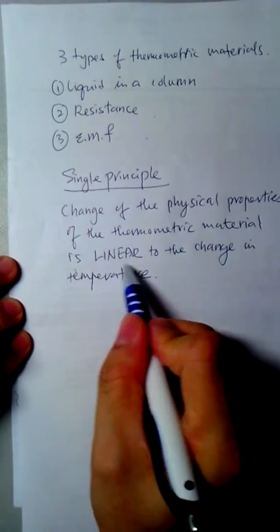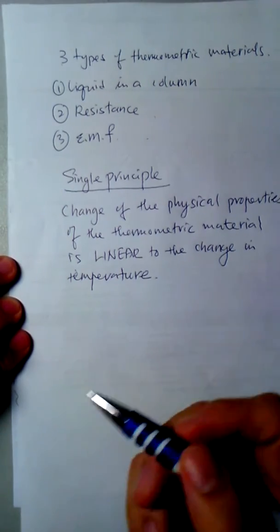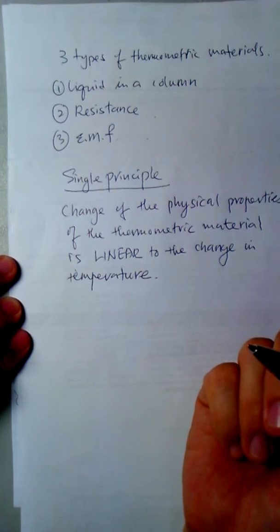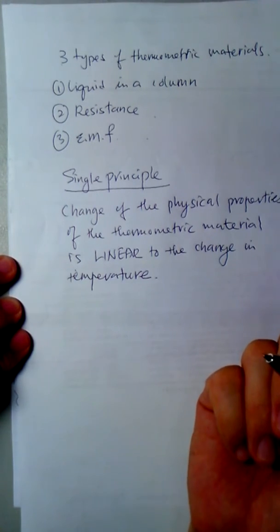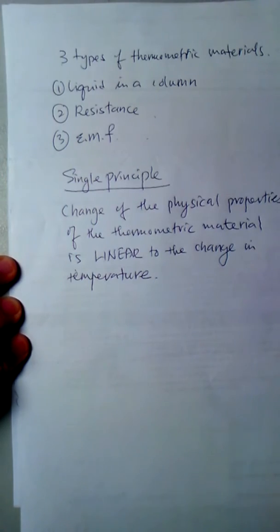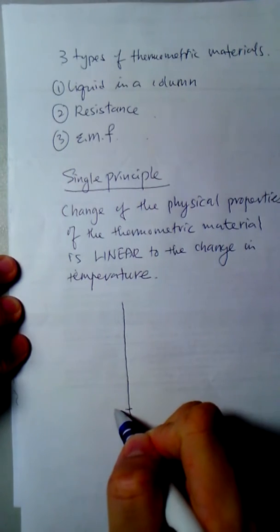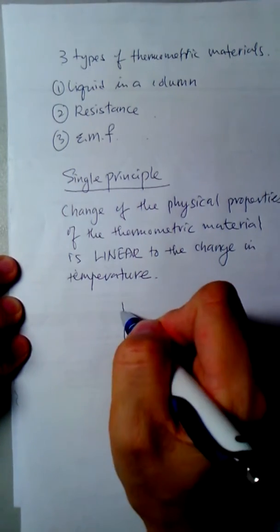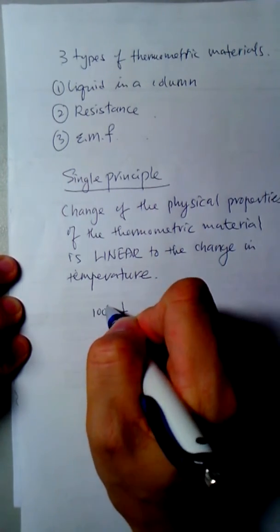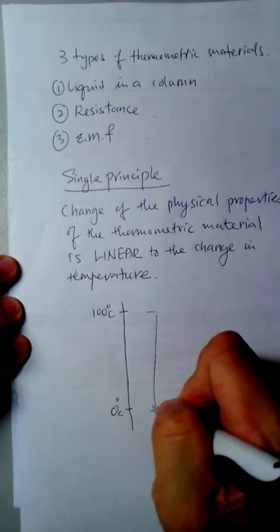If the change is not linear, then the material is not suitable. For example, you measure the change in liquid length in a column in a mercury thermometer. This is the length of mercury column at zero degrees C, then the change to 100 degrees C you can measure that this length is x.